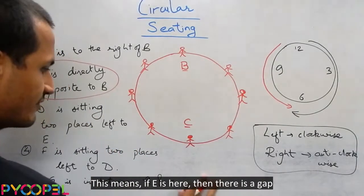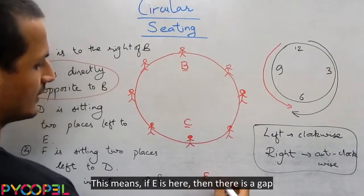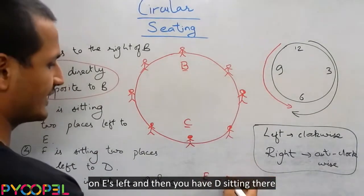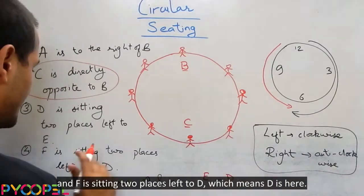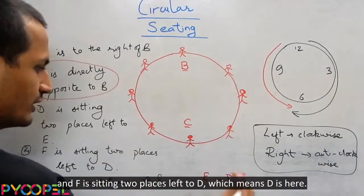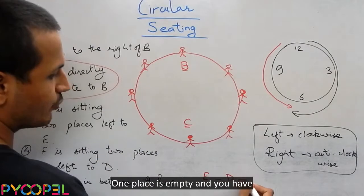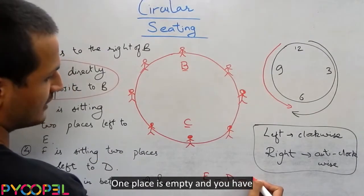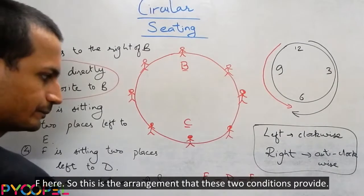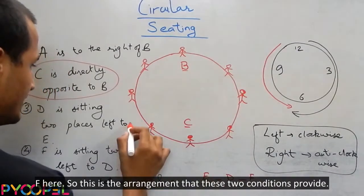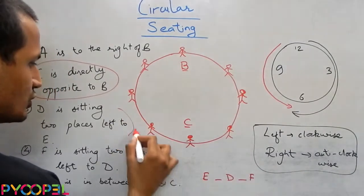This means if E is here, then there is a gap on E's left and then you have B sitting there. And F is sitting two places left to D, which means D is left, one place is empty and you have F here. So this is the arrangement that these two conditions provide.